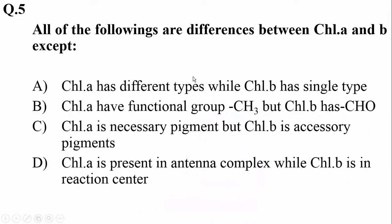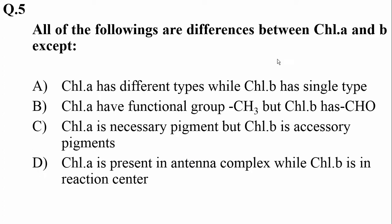All of the following are differences between chlorophyll a and b EXCEPT: chlorophyll a has different types while chlorophyll b is a single type — yes, that is a difference. Chlorophyll a has a methyl functional group but chlorophyll b has an aldehyde — yes, also a difference. Chlorophyll a is a necessary pigment while chlorophyll b is the accessory pigment — yes. Chlorophyll a is present in the antenna complex while b is in the reaction center — this is the wrong statement, because chlorophyll a is found in the reaction center as well as in the antenna complex. So the right option is D.